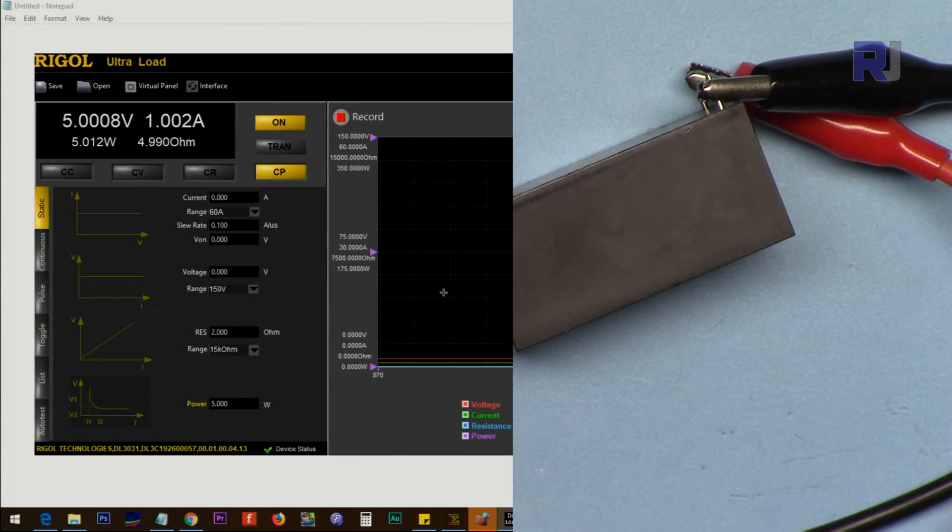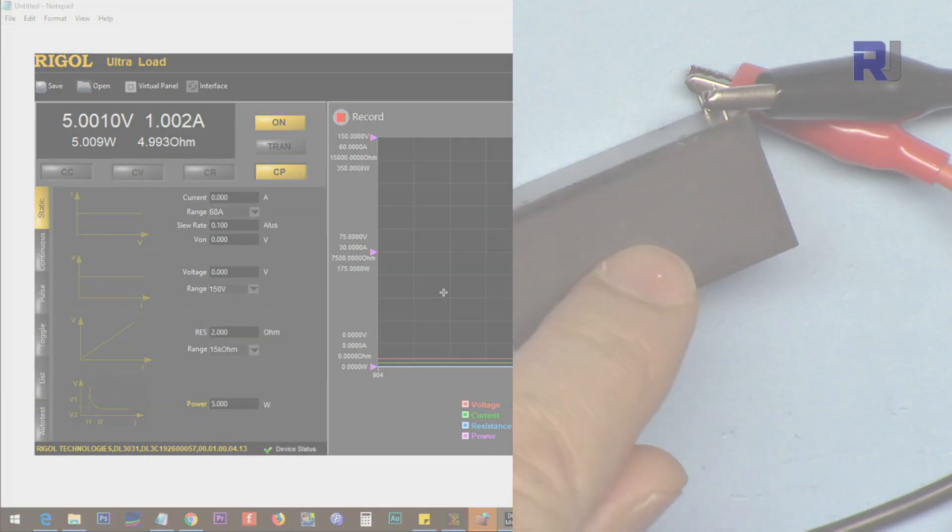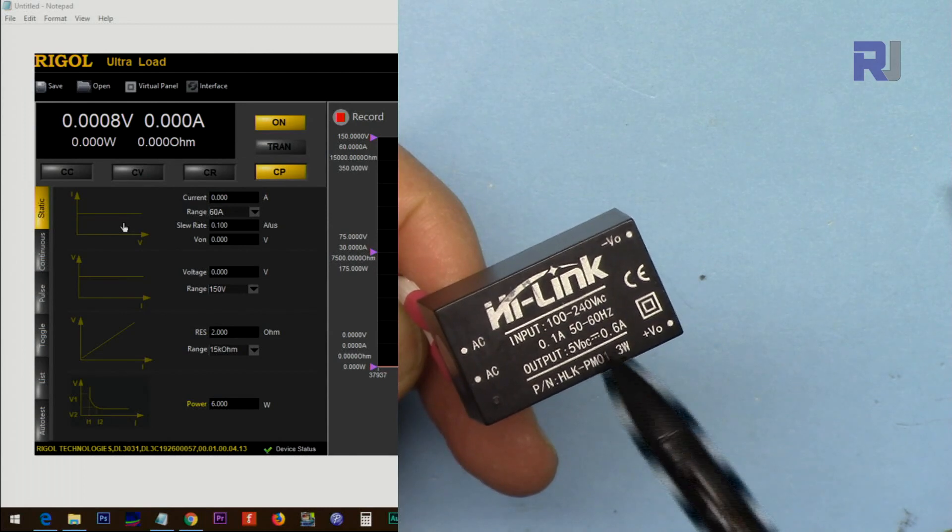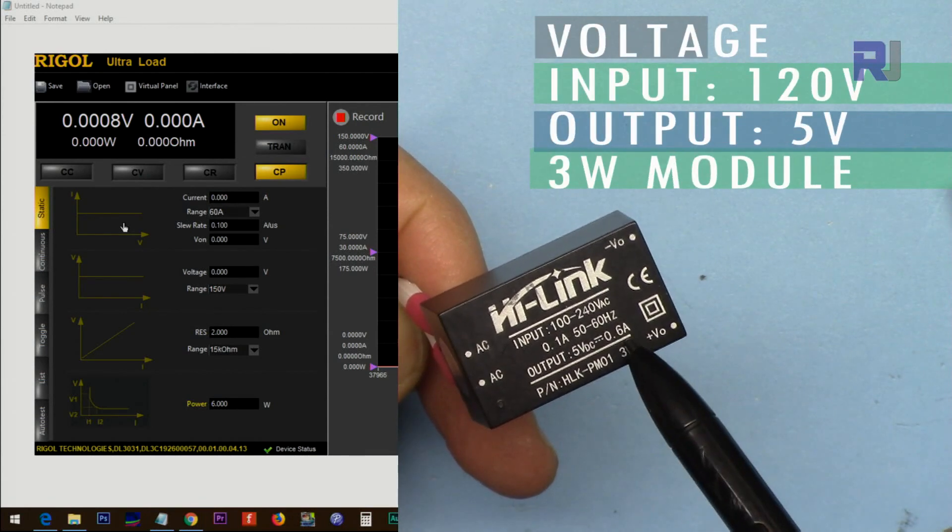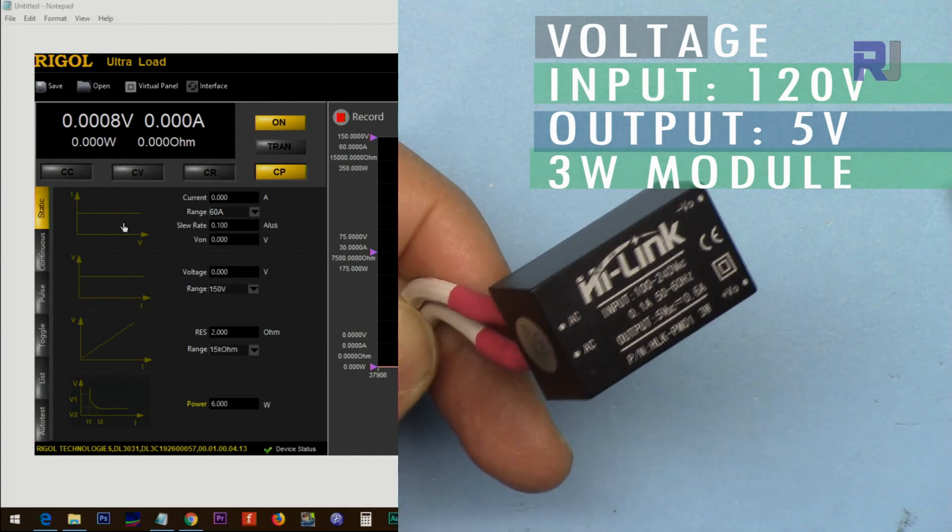I'm unable to determine the efficiency of this device in terms of AC. Now I'm testing this 5 volts 3 watt, which gives about 0.6 ampere DC, the smaller version.